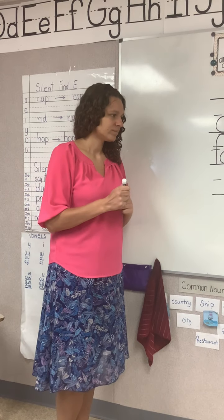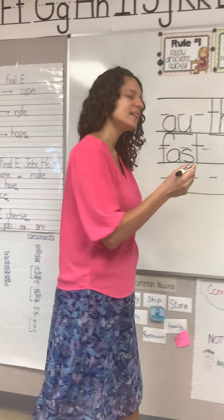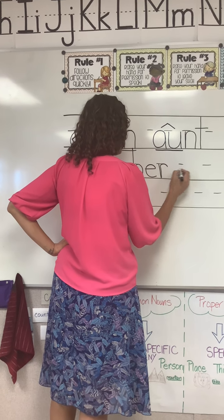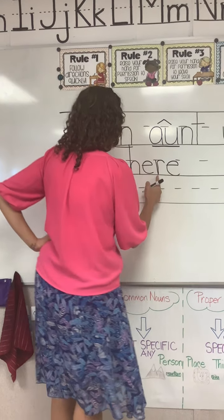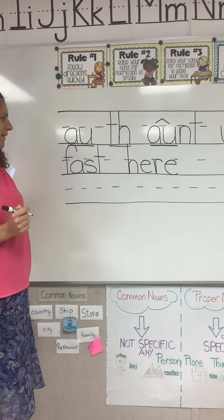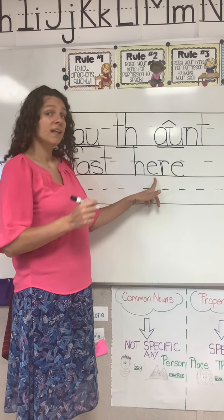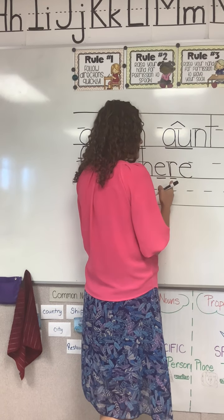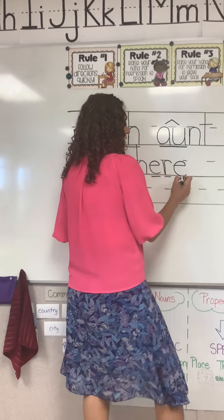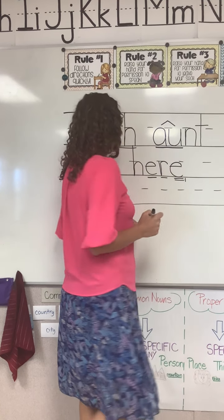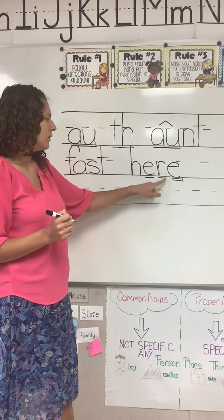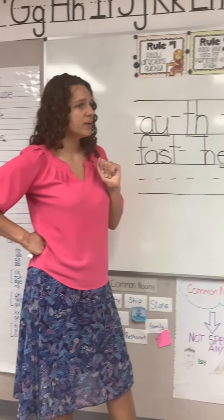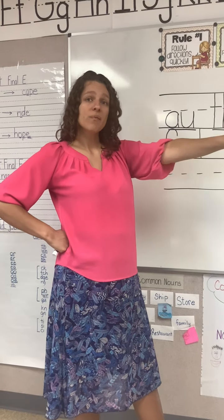Our next word is 'fast'. What's the word? Good. I cannot run very fast. What sounds do we hear in the word 'fast'? Good — F-A-S-T. Write those sounds and say them while you write them. All right, class, what do I need to write to spell 'fast'? Nice. Let's mark it — does it need a marking? Nope. Let's say our sounds and put them together.